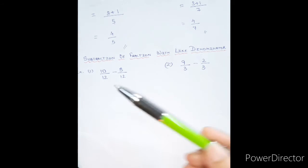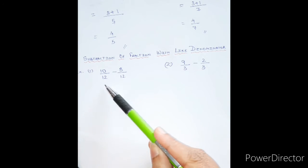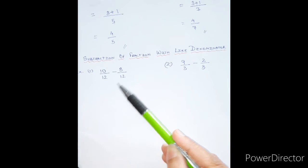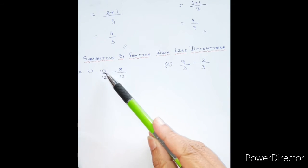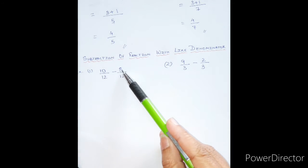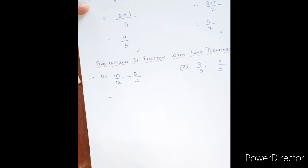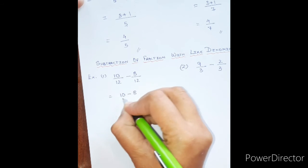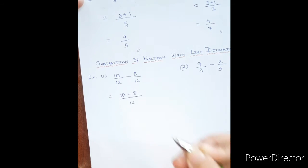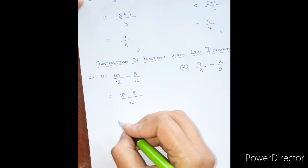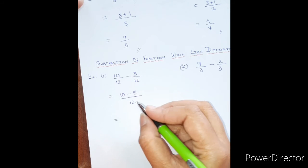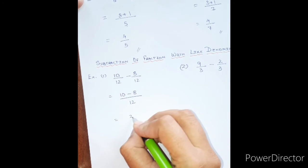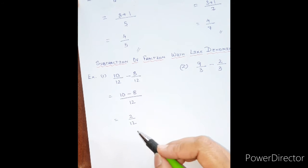The denominators are the same, that is 12. The denominator is common, so we write it only one time and just subtract the numerators — that is 10 minus 8. So we write 10 minus 8 upon the common denominator, which is 12.